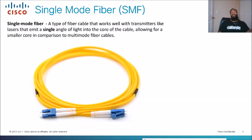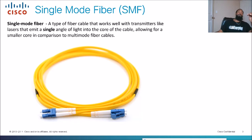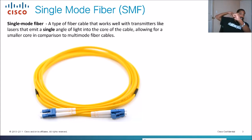There are different types of fiber. The two types we're going to talk about are single mode fiber and multi-mode fiber. Single mode fiber is defined as a type of fiber that works well with transmitters like lasers that emit a single angle of light into the core of the cable, allowing for a smaller core in comparison to multi-mode fiber cables. Single mode fiber's jacket is usually yellow. One thing to know is that it travels further than multi-mode fiber, and I'll show you why. The core is really small — think of it like a really small pipe where the light needs to pass through. Because of how small it is and because the laser goes straight through, it goes further. That's why single mode fiber goes further.